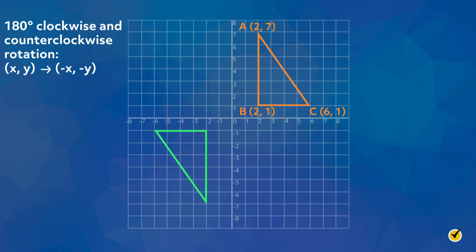Point A (2, 7) becomes point A' (-2, -7). Point B (2, 1) becomes point B' (-2, -1). And point C (6, 1) becomes point C' (-6, -1).